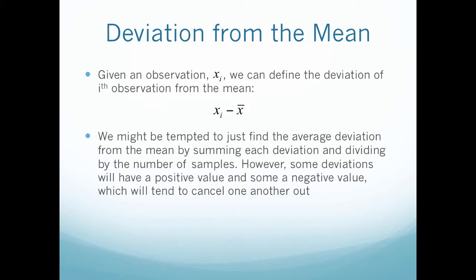We might be tempted just to find the average deviation from the mean by summing up each deviation and dividing by the number of samples. However, some deviations will have a positive value and some a negative value, which will tend to cancel one another out.